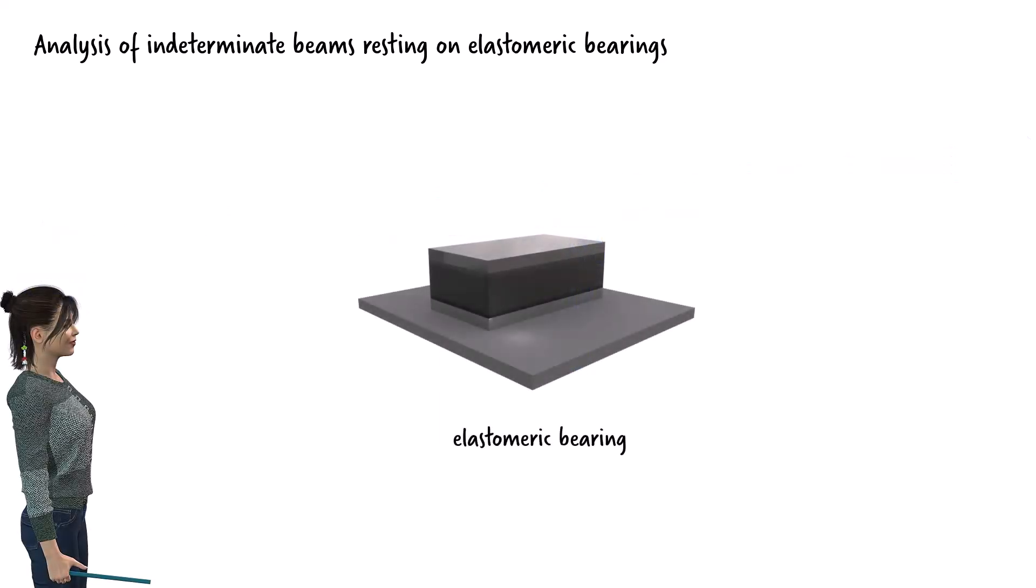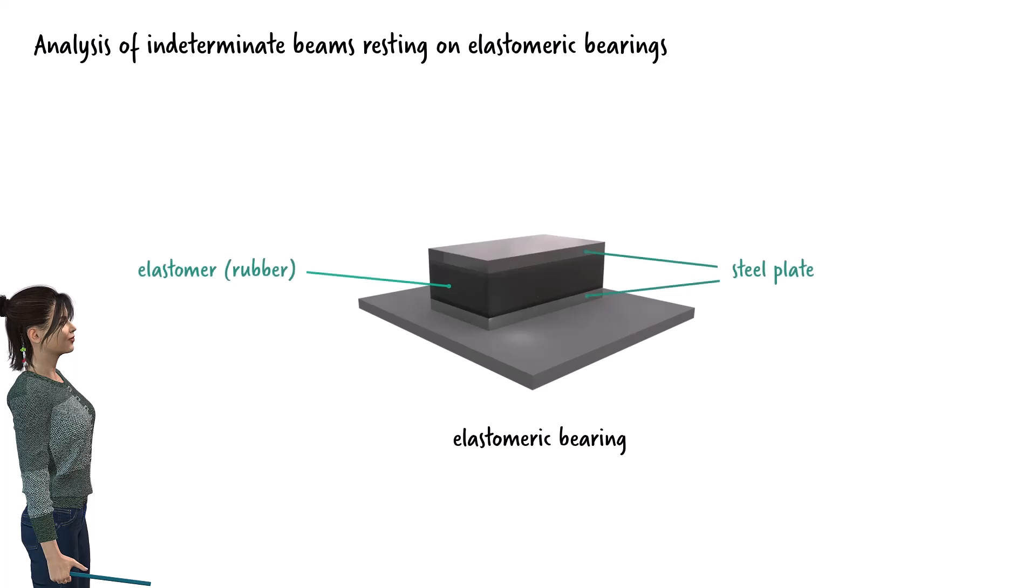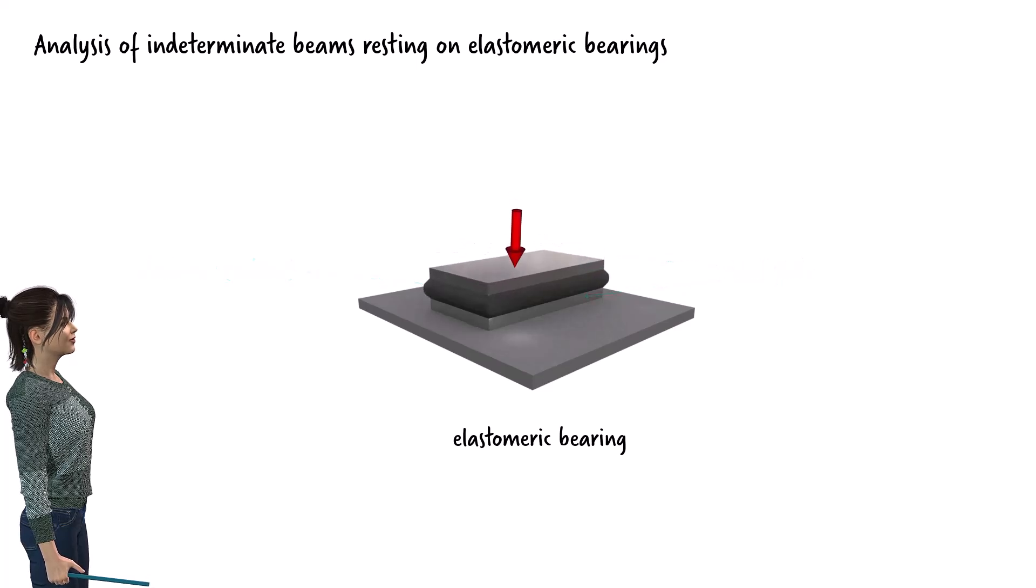An elastomeric bearing consists of layers of elastomer, typically neoprene or natural rubber, bonded to steel plates. This configuration allows the bearing to compress vertically under the bridge's weight, while also accommodating horizontal movement and rotation, which are essential for bridges to withstand various loads and environmental conditions.